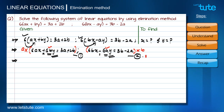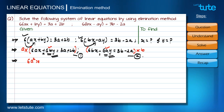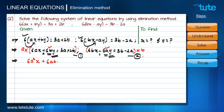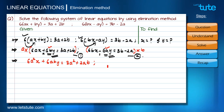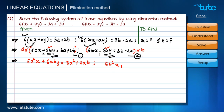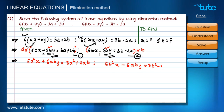Multiplying equation one by a gives: 6a²x + 6aby = 3a² + 2ab. Multiplying equation two by b gives: 6b²x − 6aby = 3b² − 2ab.